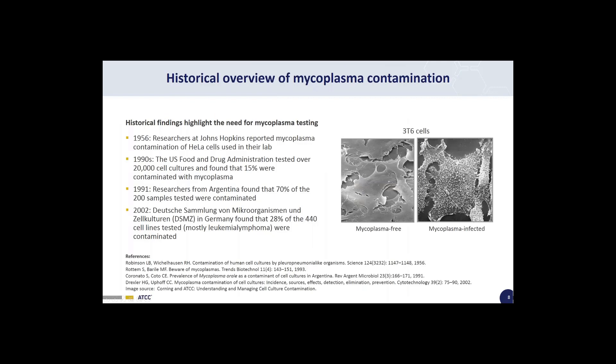I will now give a historical overview of mycoplasma contamination, highlighting findings that emphasize the need for mycoplasma testing. In 1956, researchers from Johns Hopkins reported mycoplasma contamination of HeLa cells. By the early 1990s, the US FDA had tested over 20,000 cultures and found 15% contaminated with mycoplasma. A study in 1991 from Argentina found 78% of 200 samples tested were mycoplasma contaminated. More recently, in 2002, a report by DSMZ in Germany found 28% of 440 lines tested were contaminated. Hence, mycoplasma contamination in cell culture is a long-standing and persistent problem.